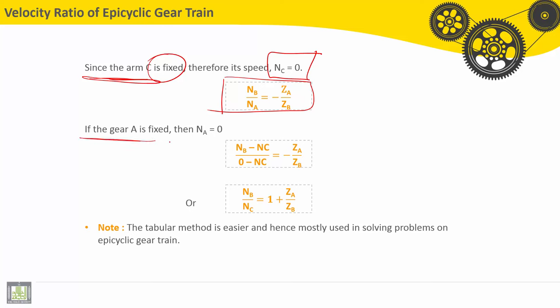Now if gear A is fixed, then NA is equal to zero, and then NB minus NC should be equal to zero minus NC multiplied by ZA divided by ZB. And we can find NB divided by NC is equal to one plus ZA divided by ZB.